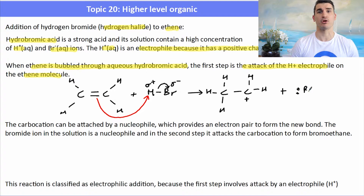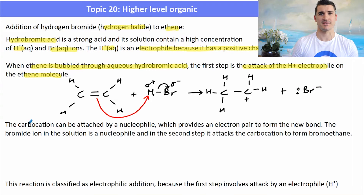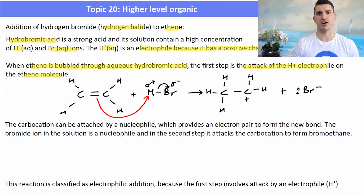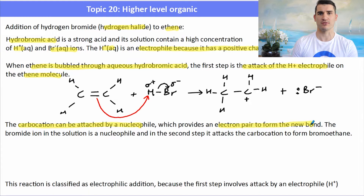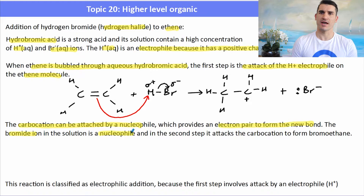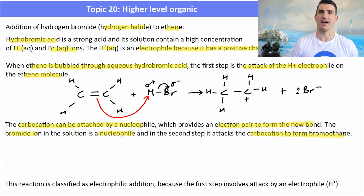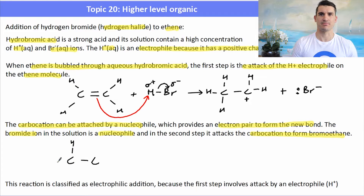We're still left with our bromide ion, which comes into play in the second step. The carbocation can now be attacked by a nucleophile — the Br⁻ is now a nucleophile and it will provide both of the electrons for the bond. The carbocation is attacked by the bromide ion to form bromoethane, and that's the final step in the mechanism.